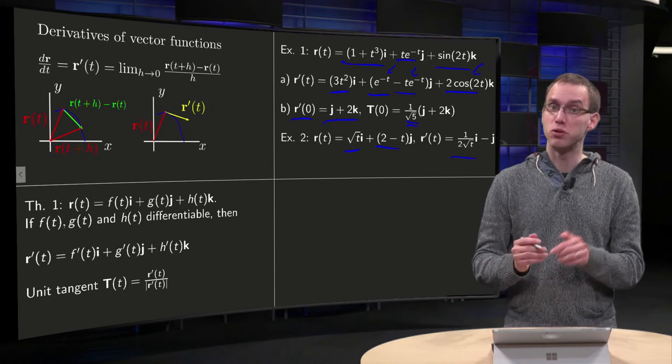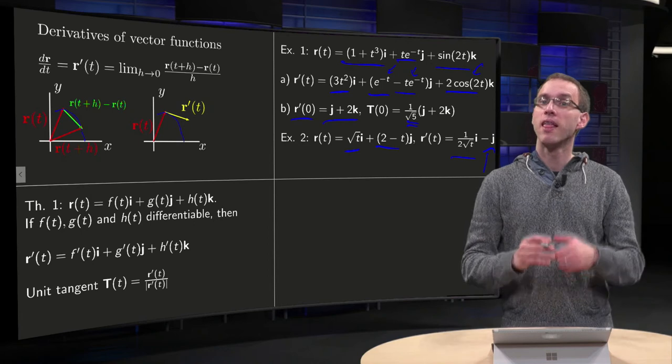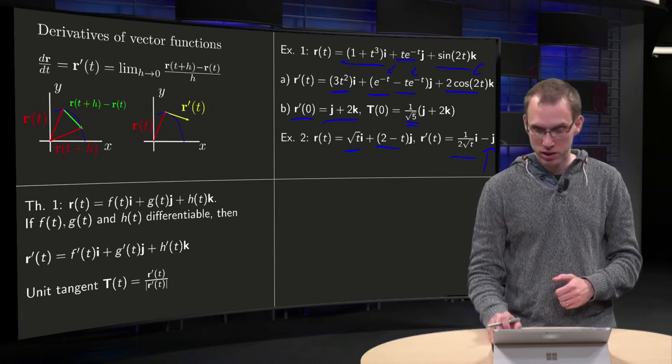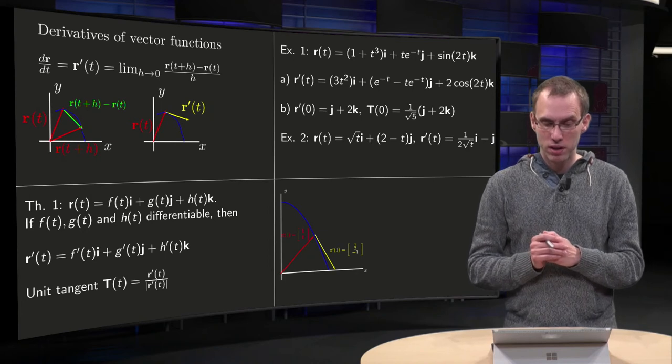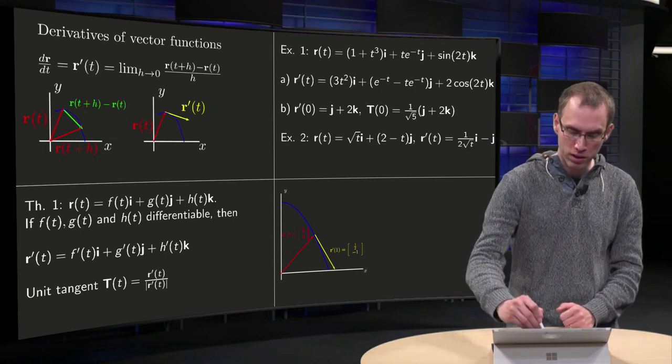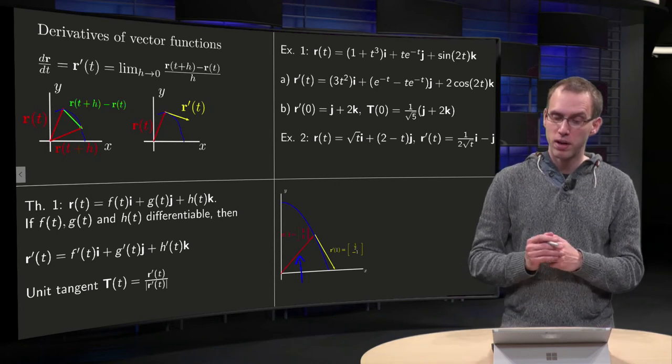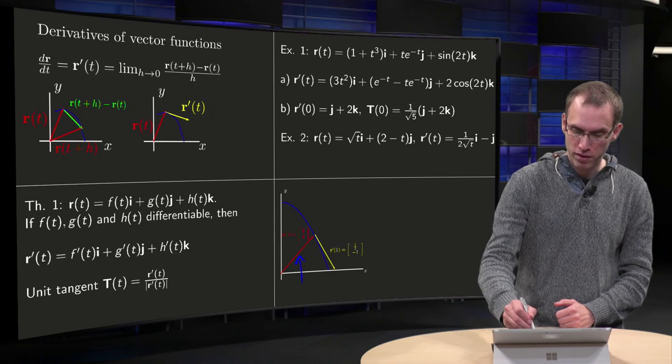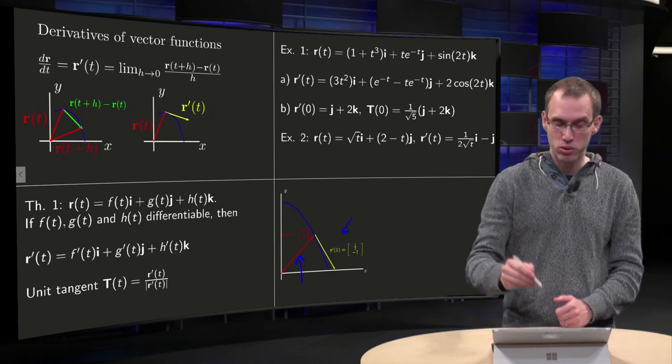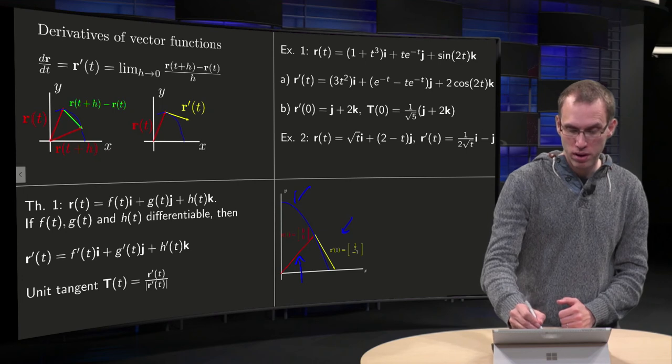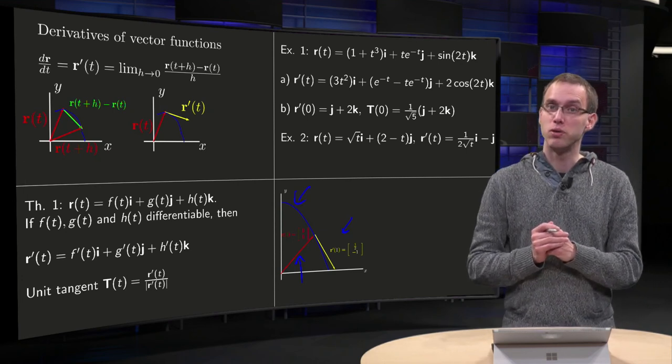And differentiate 2 minus t equals minus 1, so minus j over there. And let's try to sketch it for t equals 1. So if we plug in t equals 1, we get the vector r(1) equals 1 over there. And r' will be 1/2 minus 1 over here, and you see indeed that is a tangent vector to our curve, which is depicted over here as √t and 2 minus t.